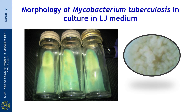This is how the organism appears in culture on the LJ medium. Typically, or characteristically, it is called rough, buff, and tough. It is tough to emulsify, it is buff in colour or a dirty cream colour, and it is rough in texture.